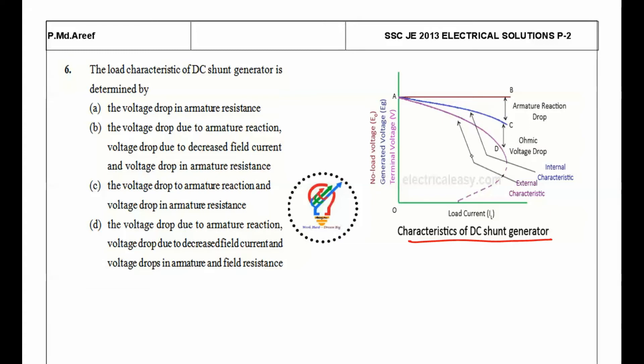The third one here is because of the decrease in field current, the EMF also decreases. Why? Because E is proportional to phi. As field current decreases, E also decreases. These are the characteristics that show the load characteristics of DC shunt generator is determined by voltage drop due to armature reaction, voltage drop due to armature resistance ohmic drop, and voltage drop due to decreased field current.